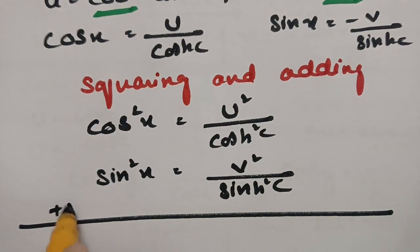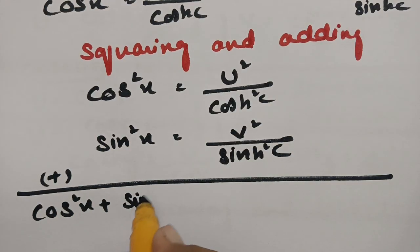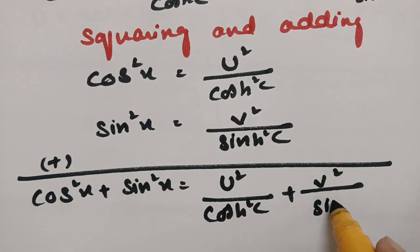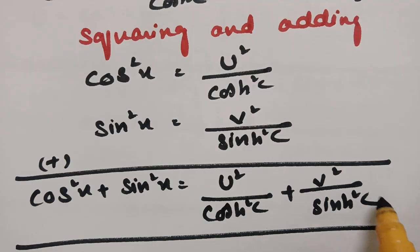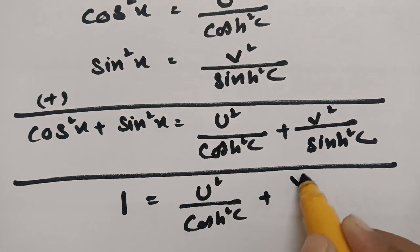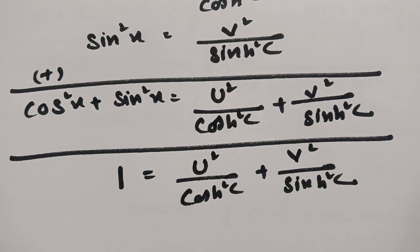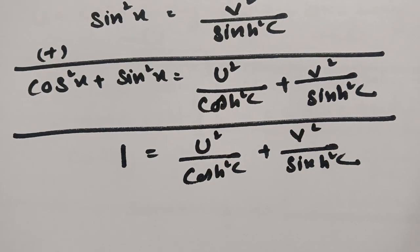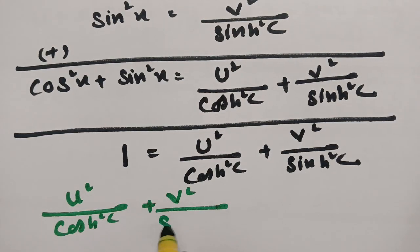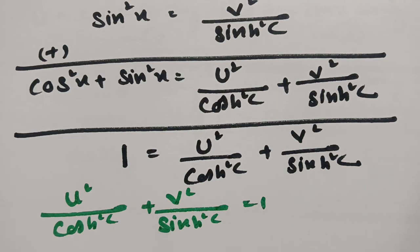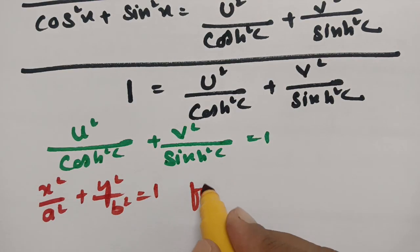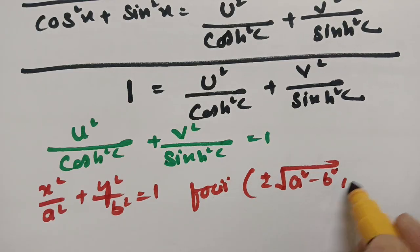Adding both squared equations: cos² X plus sin² X equals U² / cosh² C plus V² / sinh² C. Since cos² X plus sin² X equals 1, we get U² / cosh² C plus V² / sinh² C equals 1. This is of the form X²/A² plus Y²/B² equals 1, with foci at plus or minus √(A² − B²) comma 0.